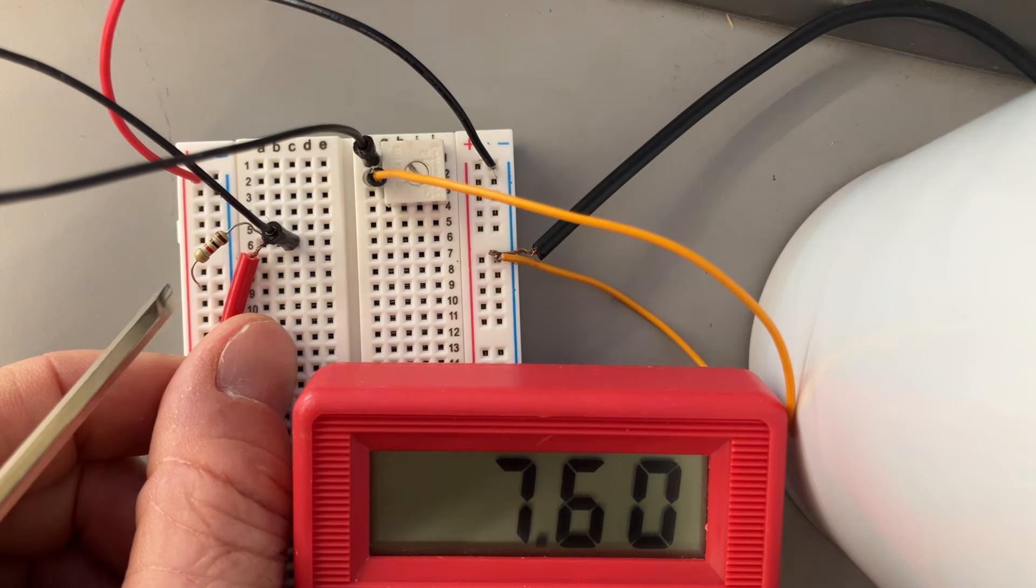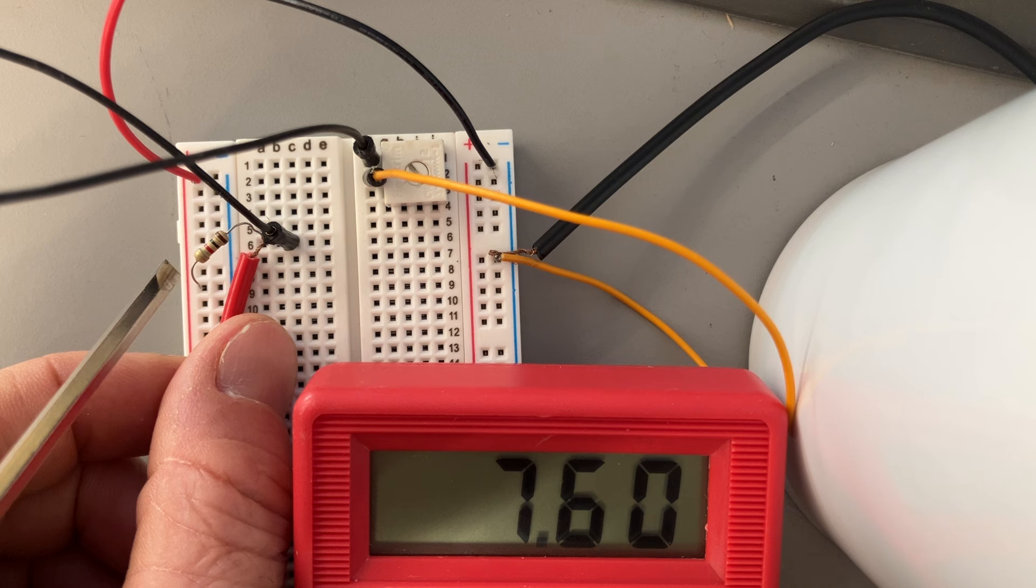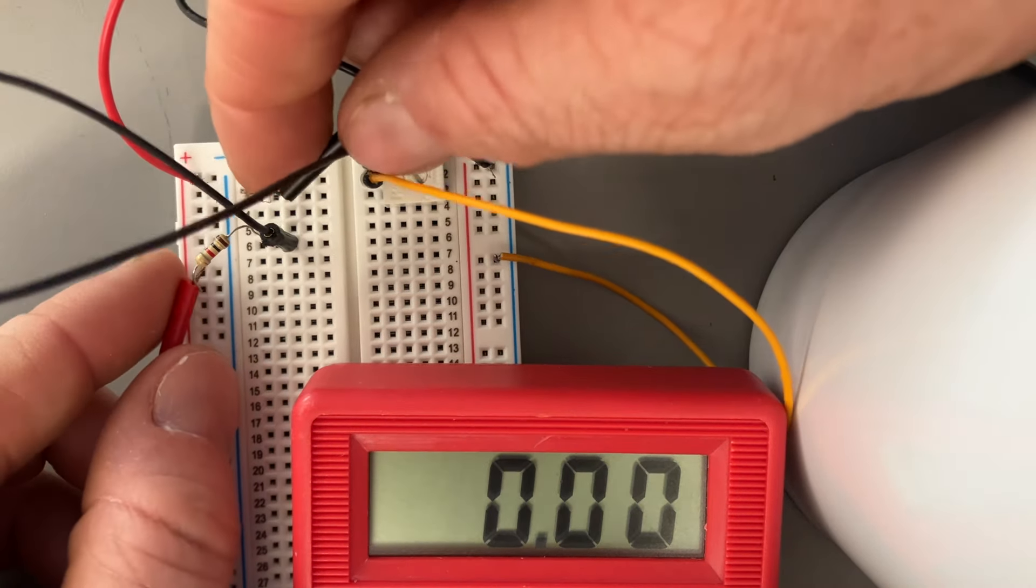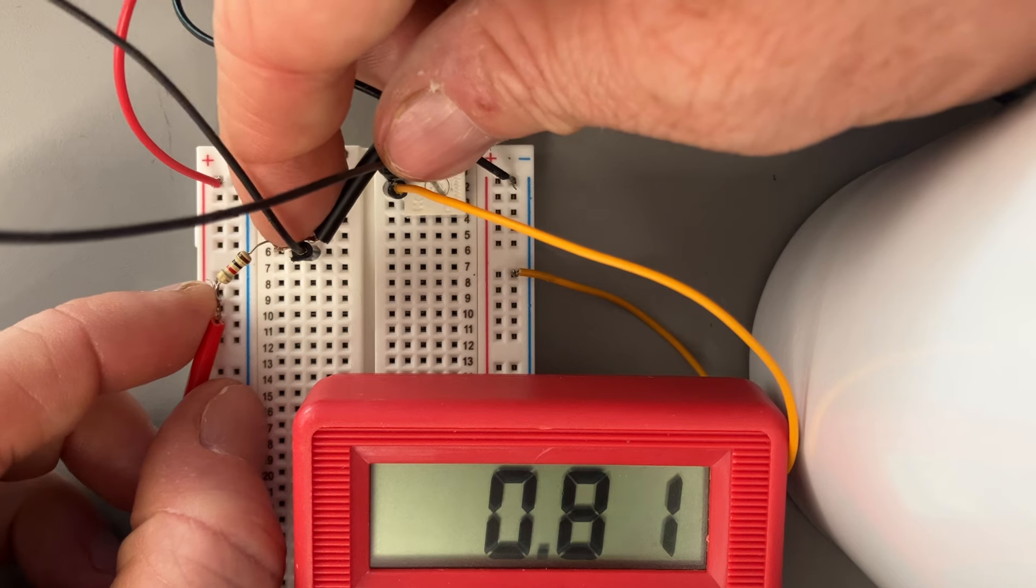This is 1,000 ohms, which is one-tenth as much. So it should give me one-tenth as much voltage, because voltage is proportional to resistance in series. So let's go ahead and double-check that. Does it give me a value of 0.76?